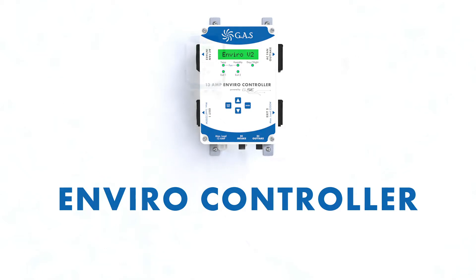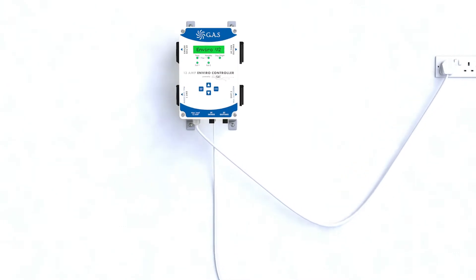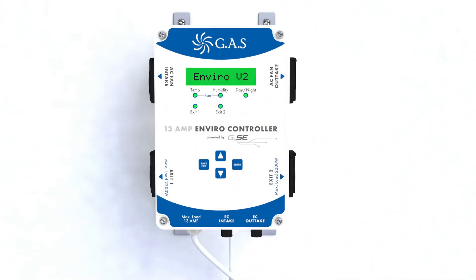The Gas EnviroController controls every aspect of your grow room environment, including fan speeds, temperature and humidity, and day and night settings.